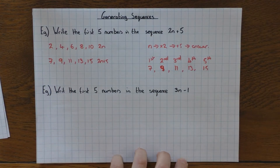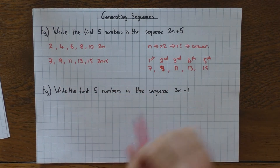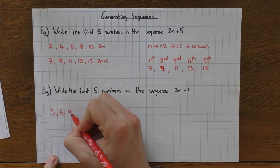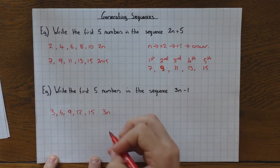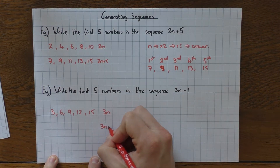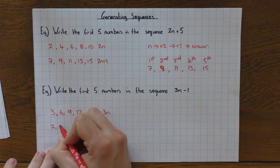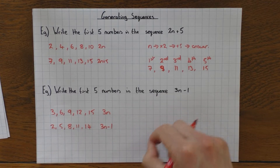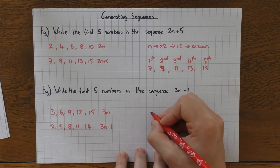So let's have a go at the next one. Write the first five numbers of the sequence 3n minus 1, so I'm going to do both ways again. So 3n is the 3 times table: 3, 6, 9, 12, and 15. And then for 3n minus 1, all I do is subtract 1 from each of these, leaving me with 2, 5, 8, 11, and 14. And again, that's that way, or this way using the substitution or flowchart.